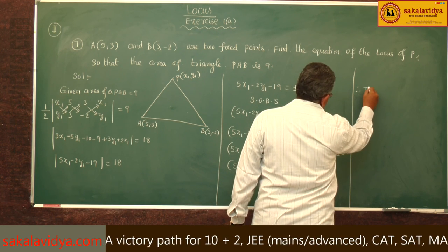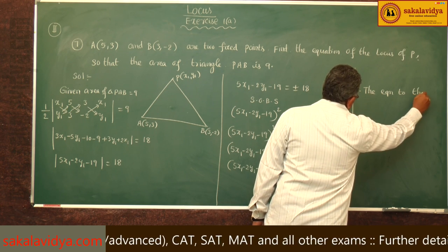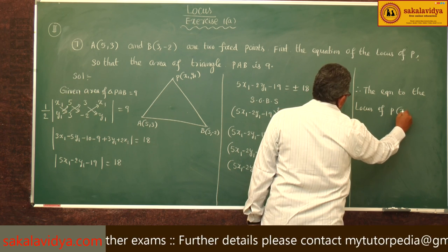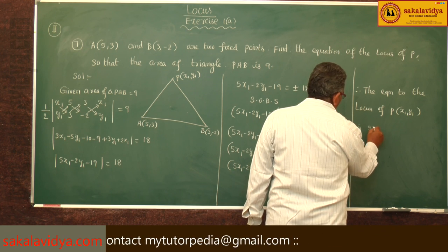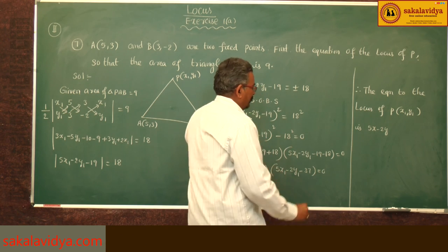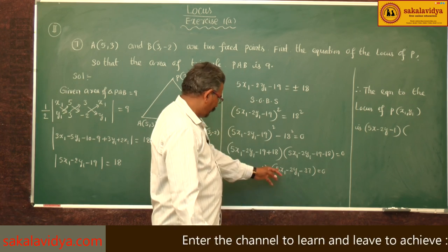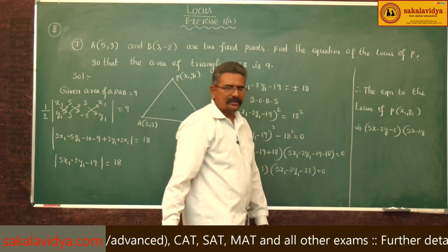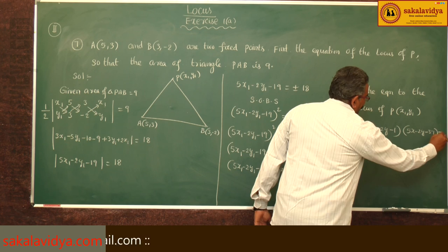Therefore, the equation of the locus of P(x1, y1) is (5x - 2y - 1)(5x - 2y - 37) = 0.